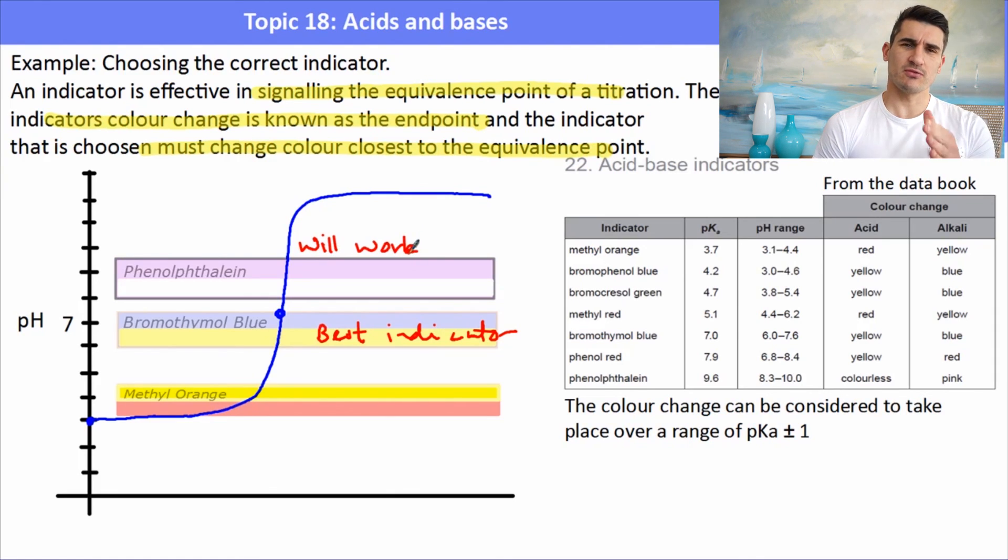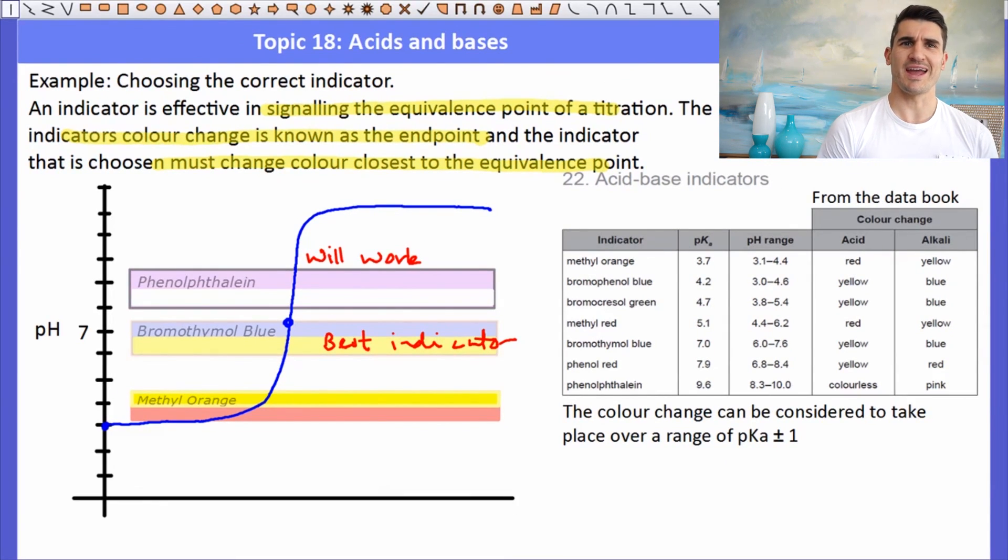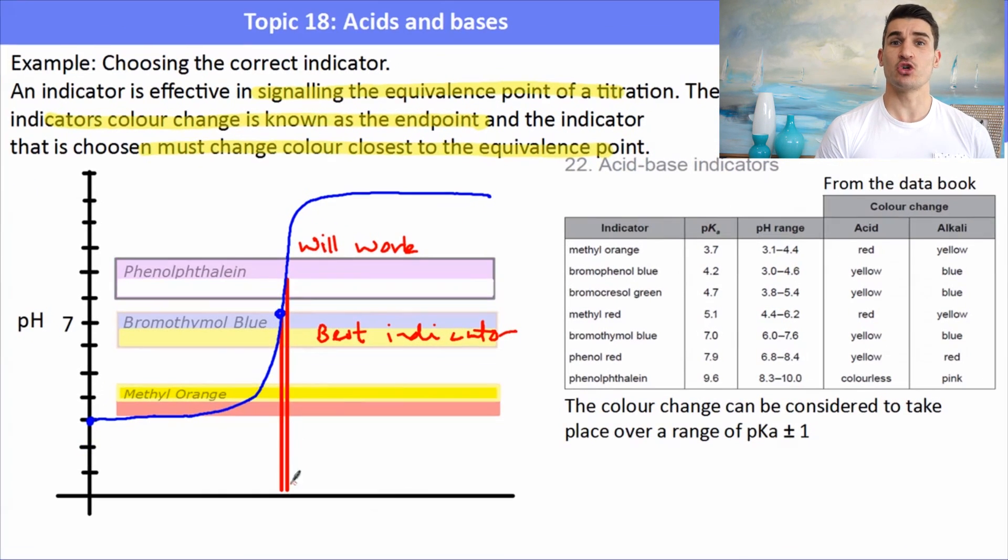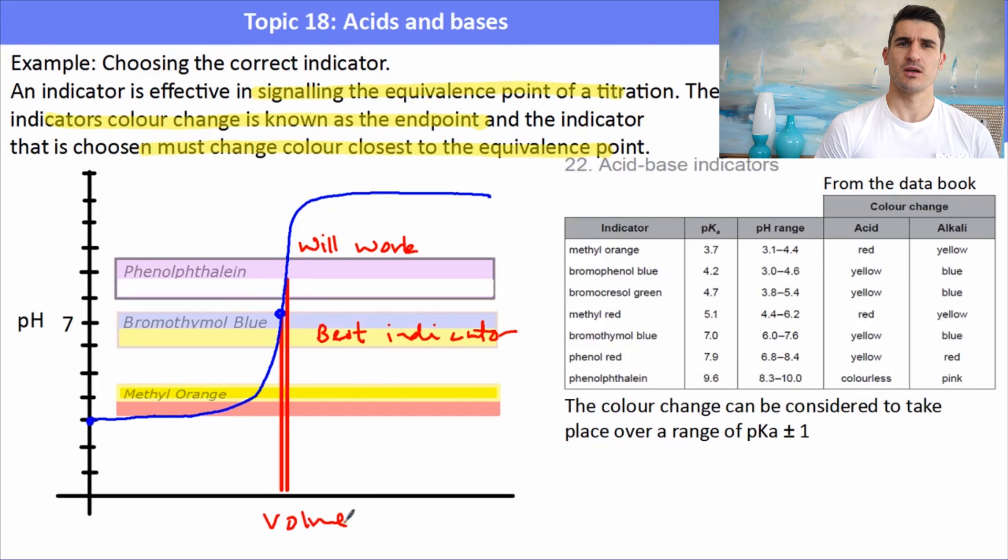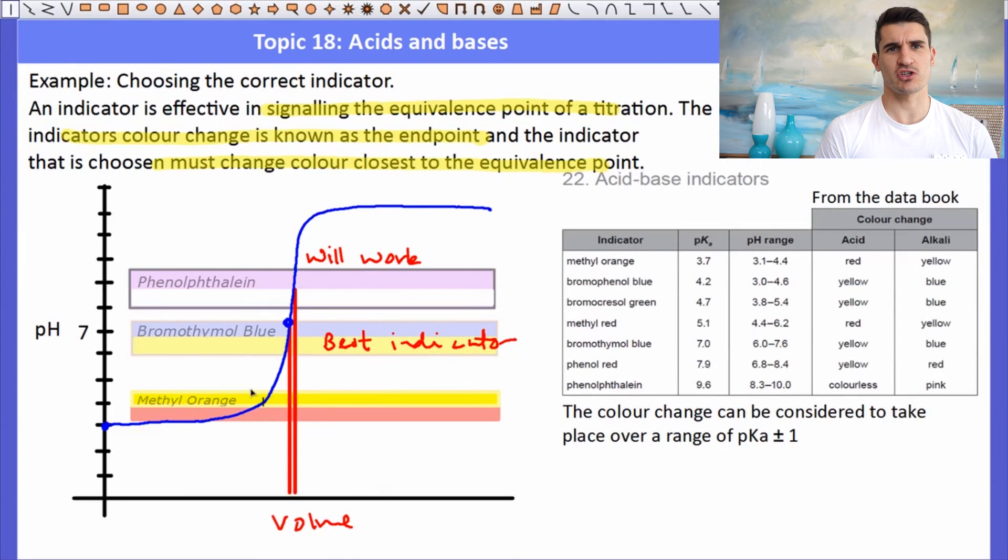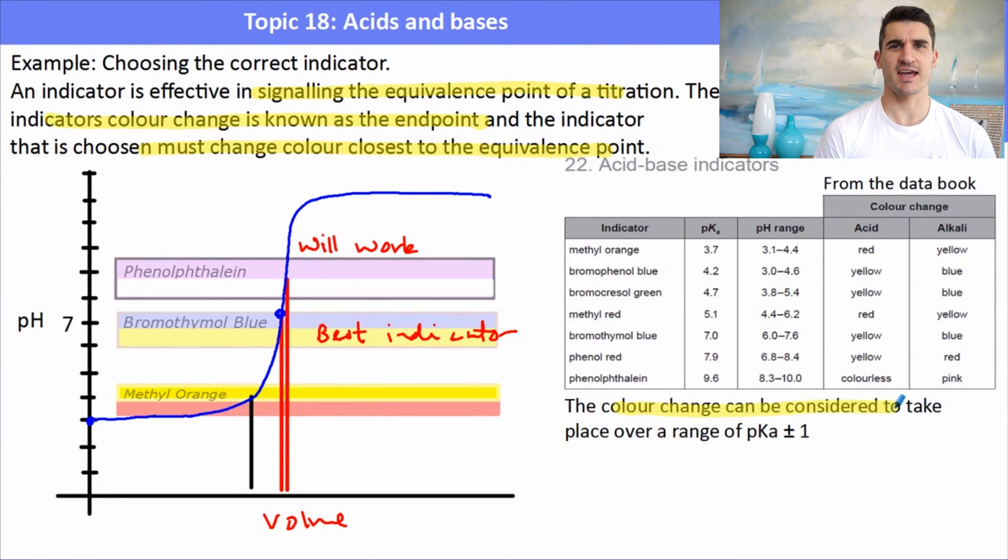The reason why that works is if we were to determine the volume that we added, for bromothymol blue and phenolphthalein, the volume difference is very small, which is why those two indicators would be said to give us a good indication of the equivalence point. From the graph that I've drawn, methyl orange would actually change color too early, and we would stop the titration too early. There's still quite a big difference in volume between the equivalence point and the endpoint of that indicator. One of the things that we can be careful of is that the color change is considered to happen over a range of pKa plus or minus 0.1, so we've got a bit of leeway there as well.